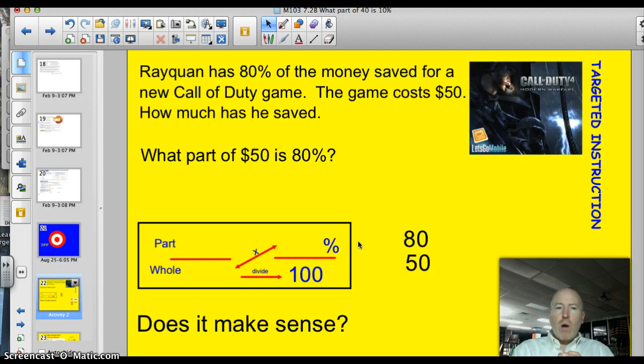Let's start off with a problem about Raekwon. Raekwon has 80% of the money saved for a new Call of Duty game. The game costs $50. How much has he saved? Well, what we're really asking is what part of $50 is 80%? So, let's pop in the numbers into the box because last night Ben Obi-Wan Kenobi said, Use the box, Luke.